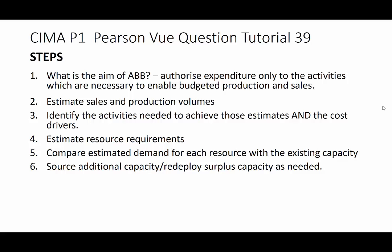We need to remind ourselves: what is the aim of activity-based budgeting? It's to authorize expenditure only to the activities that are necessary to enable the budgeted production and sales to be achieved. So we will estimate what our sales and production volumes will be, then identify the activities needed in order to achieve those estimates.